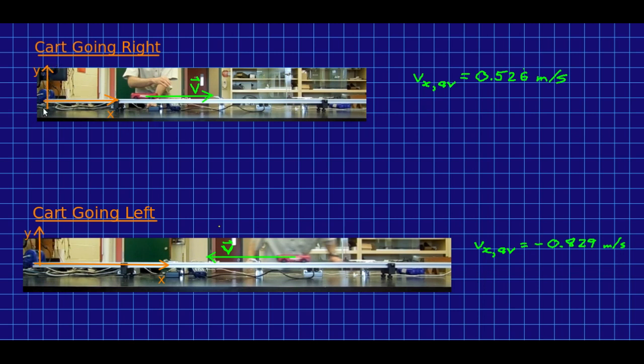Now, we're working with a set of axes that look like this, and this is basically being imposed on us by the fact that we're using the motion sensor here to measure x. And so we got an average x component of velocity, like so, 0.526 meters per second for this piece of the motion, and like so, negative 0.829 meters per second for this part of the motion.